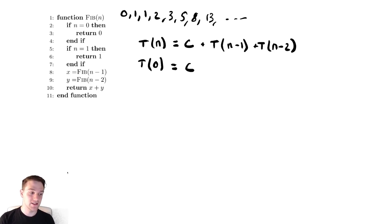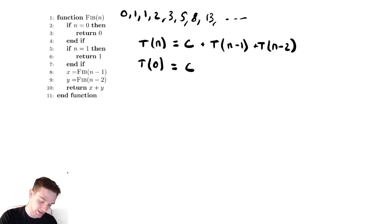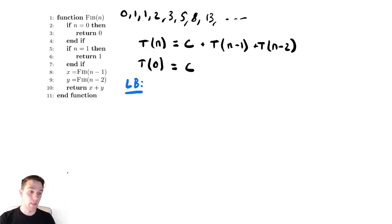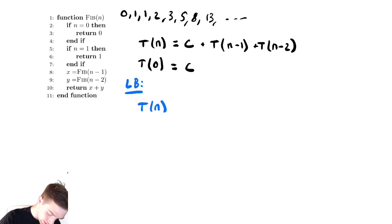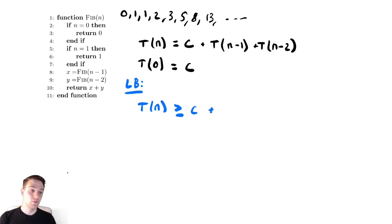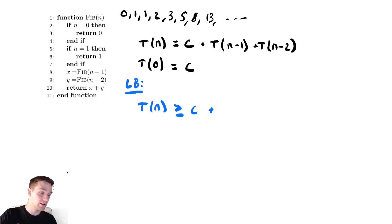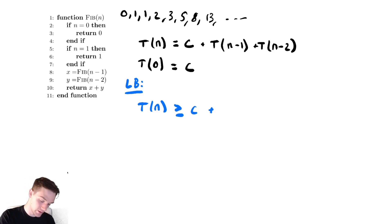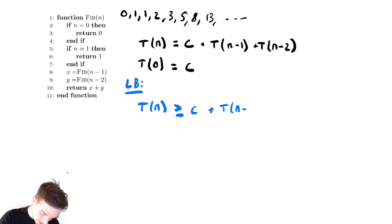Now let's analyze this. This is an example of an algorithm where we only really need to bound it from below, for some not-so-obvious reasons. So I'm going to give this a lower bound by making the larger of the recursive calls smaller. T of n is greater than or equal to C plus a recursive call of size n minus 1 and a recursive call of size n minus 2. Since T of n minus 1 is the larger of the two, I want to replace it with T of n minus 2.